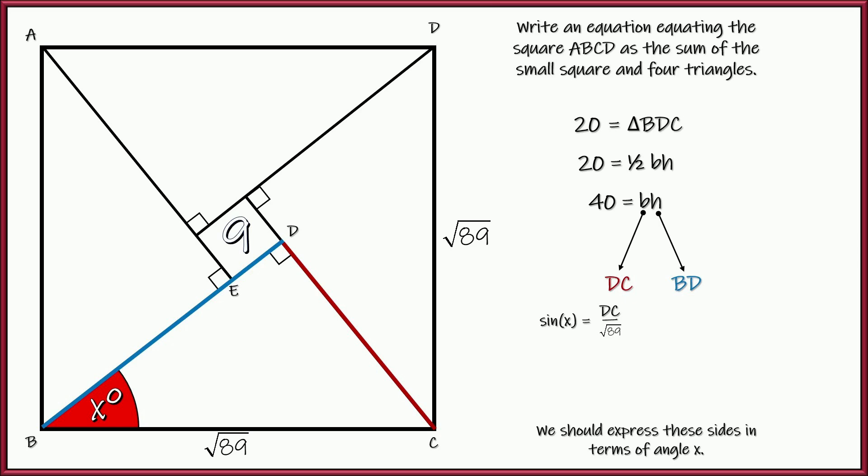The reason it's the square root of 89 is because the area of the square was 89. So taking the square root, you find that each side is square root of 89. So we can simplify that for DC so that we can later substitute it.